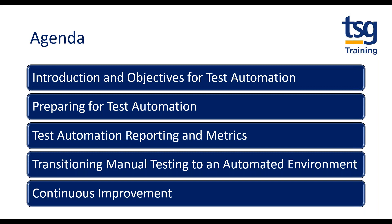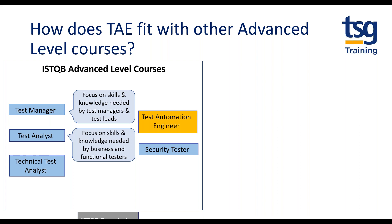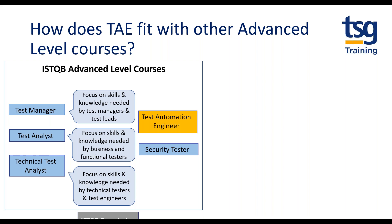The test automation engineer course is useful for a wide variety of people — both those who create and make decisions about test automation, and those who automate the tests. The course sits alongside the core advanced courses: the test manager course, the advanced test analyst course focusing on business and functional testers, and the advanced technical test analyst course. To sit the exam for any of these advanced courses, you need to have passed the ISTQB Foundation in Software Testing course.